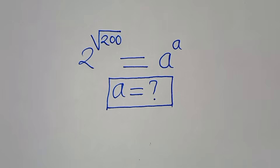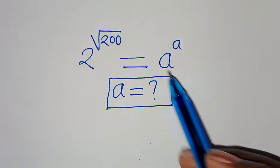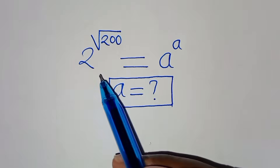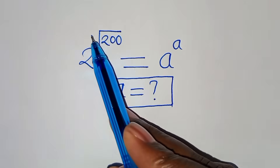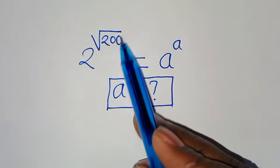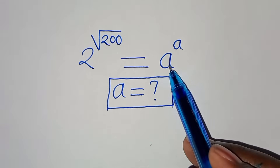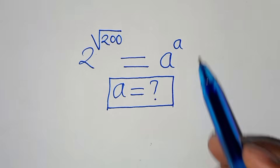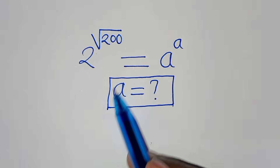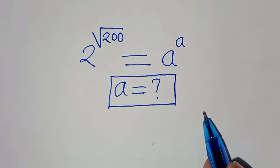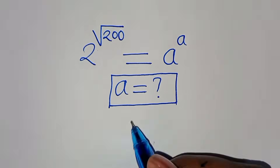Hello everyone, welcome to solve this nice exponential equation: 2 to the power of square root of 200 equals a to the power of a. What is the value of a?